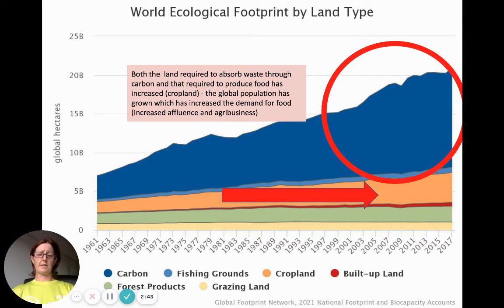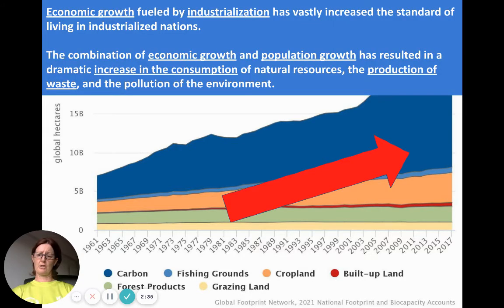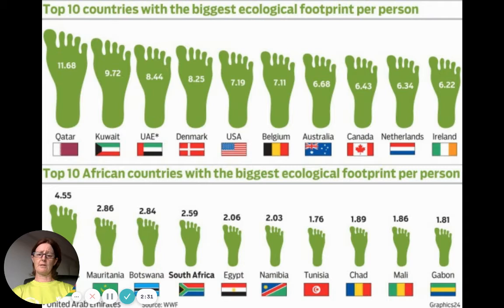So, to summarize, we've got industrialization, population growth driving demand for food, increased rural-to-urban migration and urbanization — these are the reasons for a huge increase. We can look at where our top 10 and bottom 10 countries are. Clearly there's a correlation between GDP per capita, or wealth, and the size of your ecological footprint.